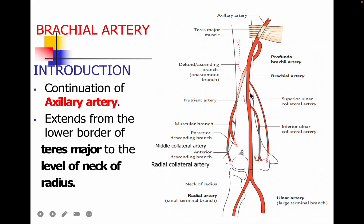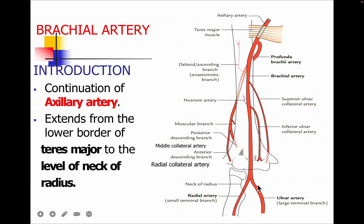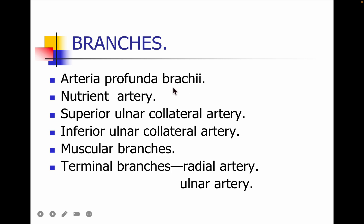The branches of the brachial artery include: the profunda brachii artery, which passes from the posterior aspect of the humerus through the spiral groove along with the radial nerve and gives an anterior descending branch and a posterior descending branch. Other branches are the superior ulnar collateral artery, the inferior ulnar collateral artery, a nutrient artery, and small muscular branches. All these arteries help in anastomosis near the elbow joint. The two terminal branches of the brachial artery are the radial artery and ulnar artery.